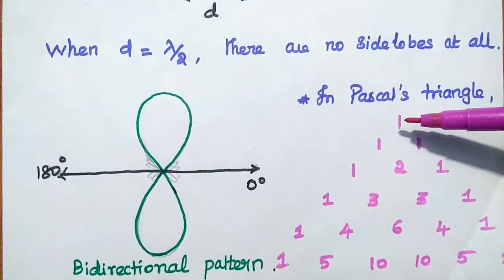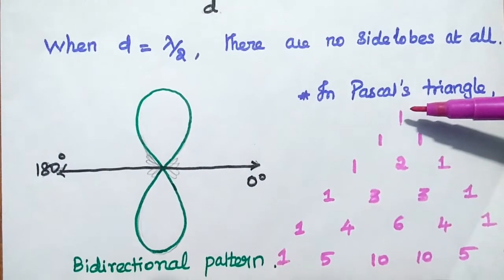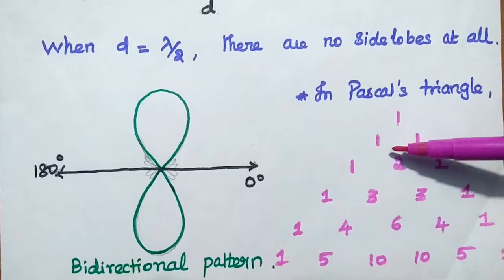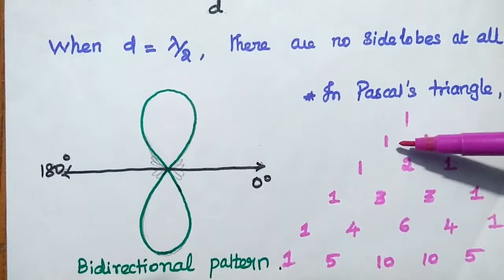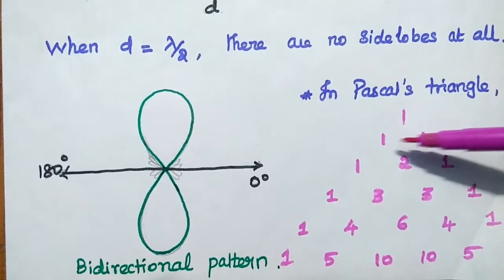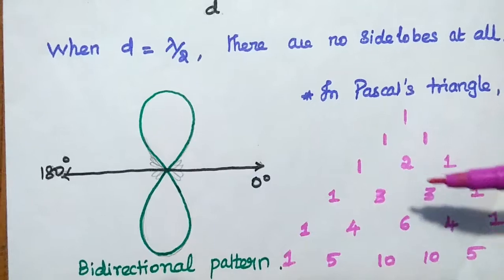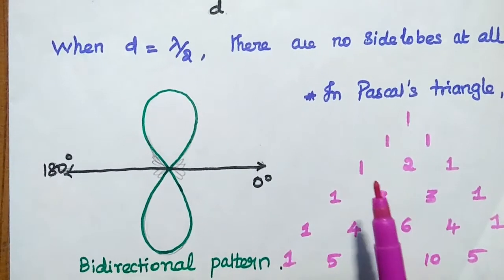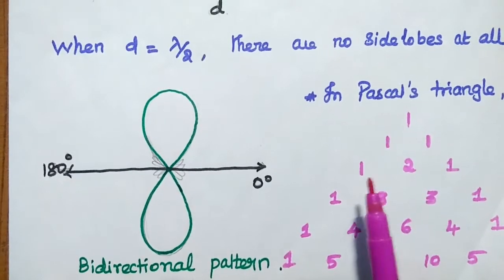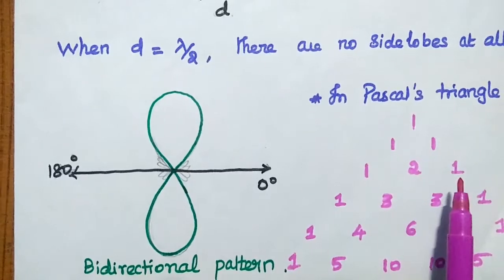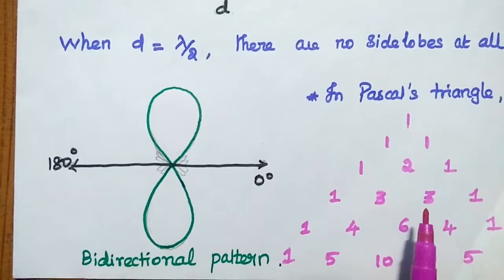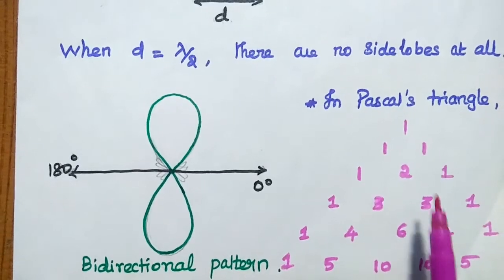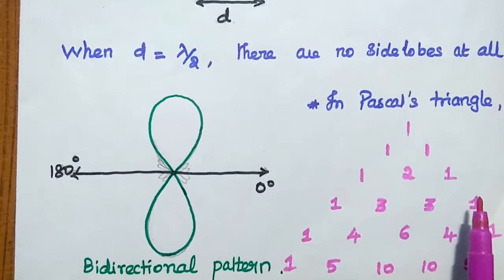Here we can represent the binomial coefficients in terms of Pascal's triangle. If there is only one element, it is not actually an array, but for the single element, we are going to give the amplitude as 1. If I am going to use two elements, then I am going to give 1, 1 as an amplitude. If I am going to use three elements, my amplitude distribution may be like this: 1, 2, 1. If four elements, the first antenna is 1, the next one is 3, the next one is 3, and the next one is 1.